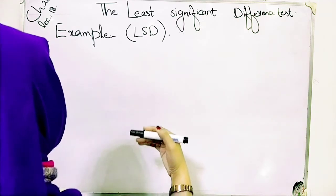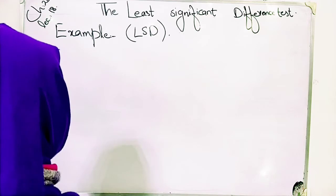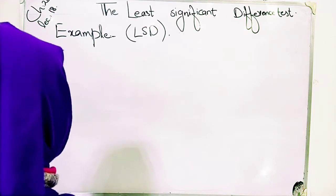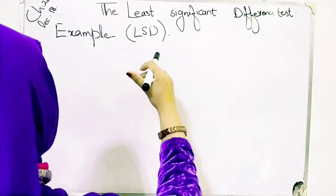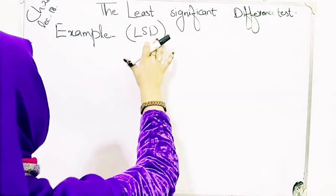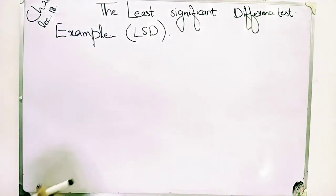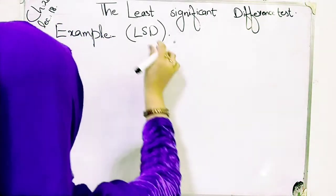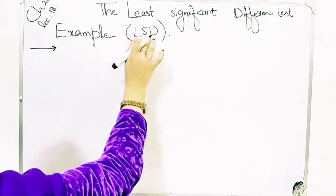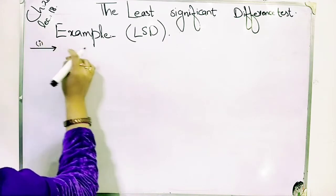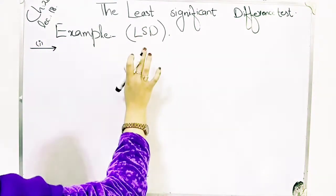You have to find between-treatment or between-blocks error term, because we use the mean square error term in the least significant difference test. So if you are given a question that you have to test the least significant difference, then you have to follow the simple method. If H-naught is not rejected, then you have to write that we have no need for using the LSD, because H-naught is accepted.